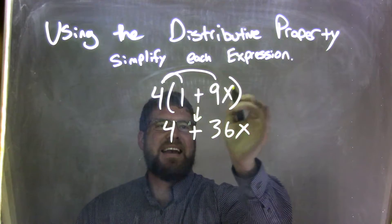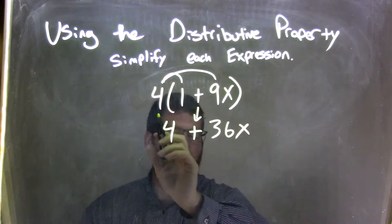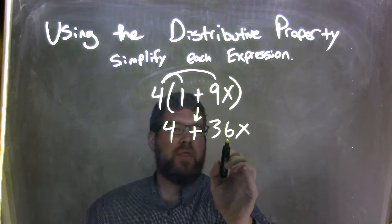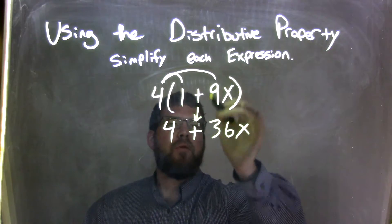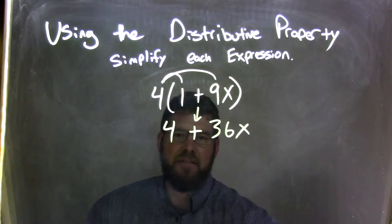Now we have 4 times 9x. We really just multiply the 4 times the 9 to get 36 and bring down the x. But really there are 9x's here, and there's 4 times that, so there's going to be 36x's.